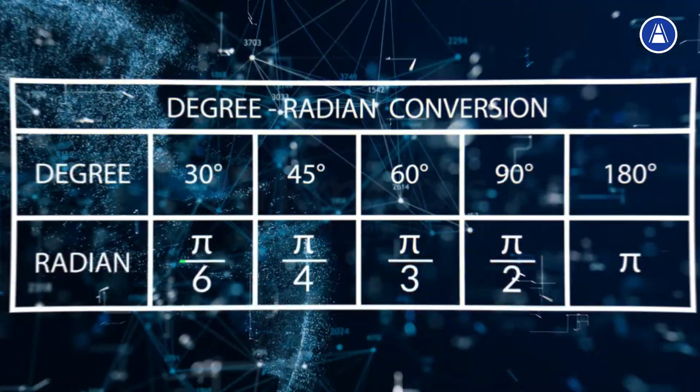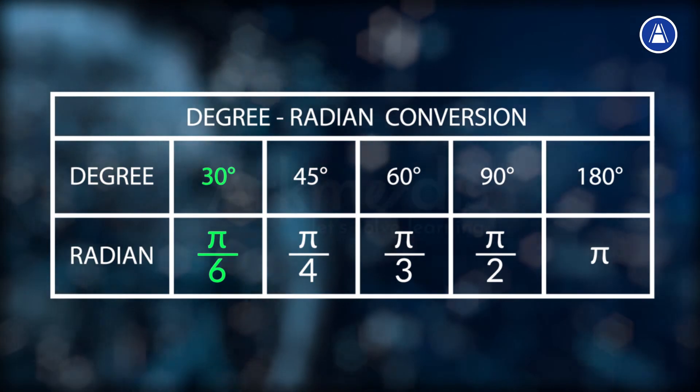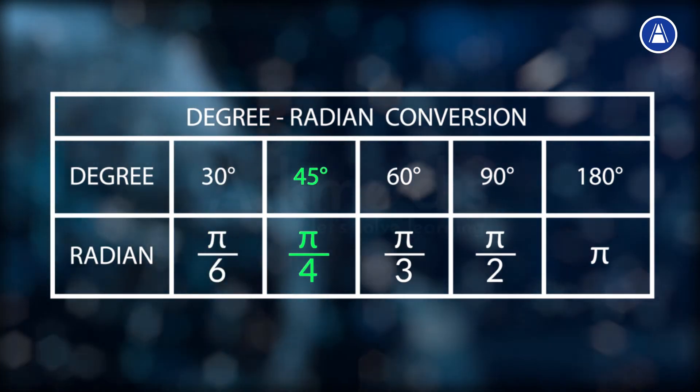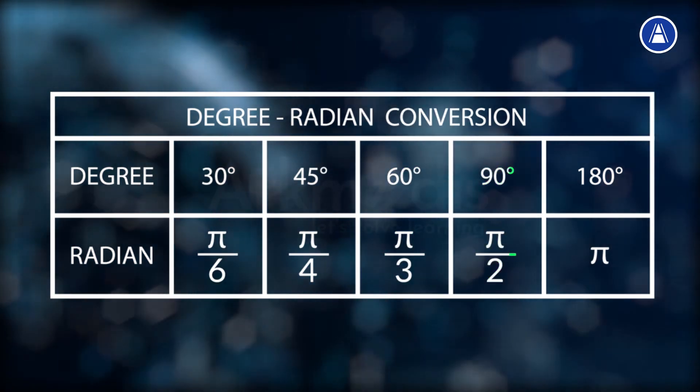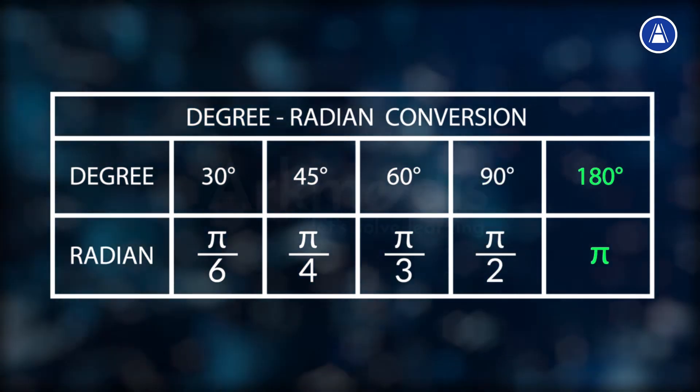With this we can convert any given radians to degrees or any degrees to radians. Some of the standard degree to radian conversions are: 30 degrees equals π by 6, 45 degrees equals π by 4, 60 degrees equals π by 3, 90 degrees equals π by 2, and 180 degrees equals π radians.